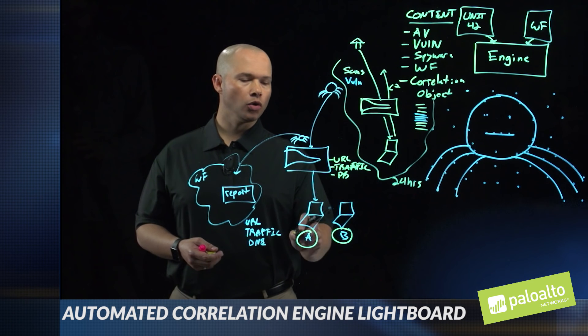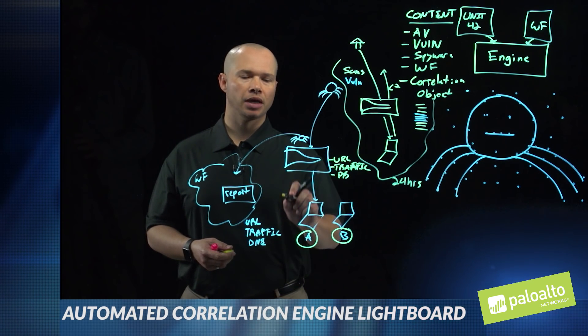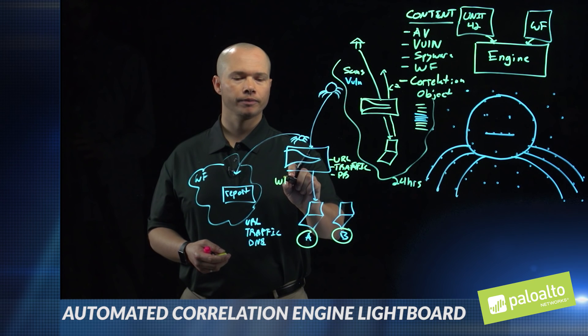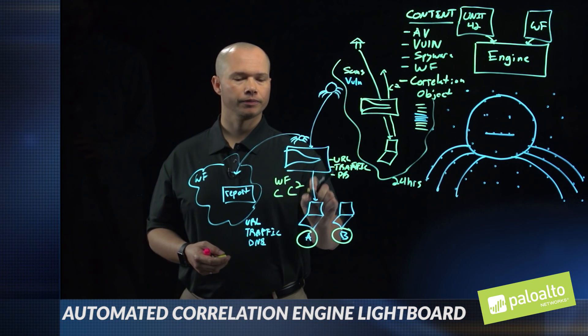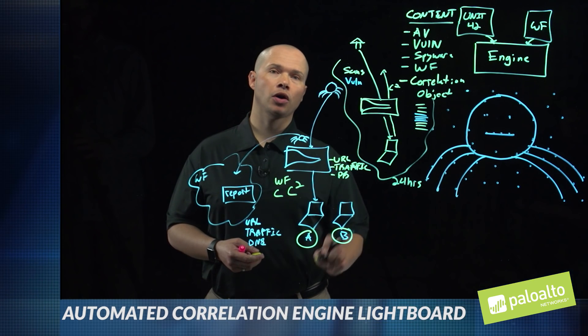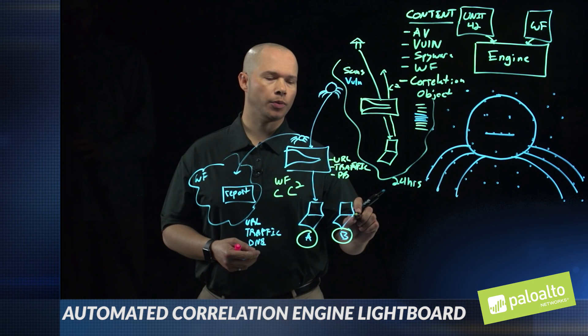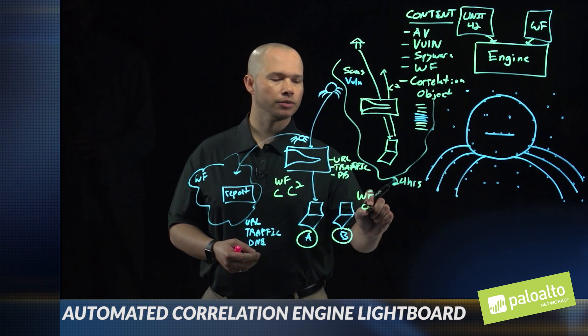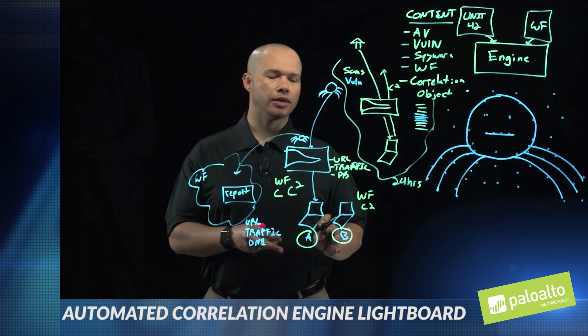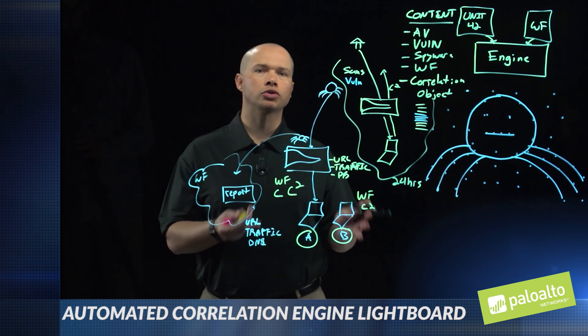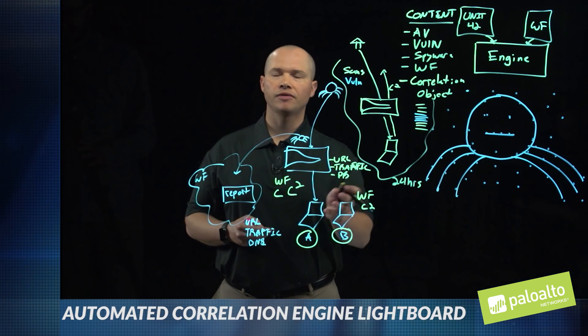When host A is the one that downloaded the file and exhibited the behaviors, we call that WildFire Correlated C2. And when we see a different host in the network exhibit the behaviors associated with a different WildFire report, we call this WildFire C2. Keep in mind it's also important that we show you all the evidence. Whenever one of these events occurs, whenever we get a correlation match, there's more than just a log — we actually give you all the evidence that led us to believe that this particular host was infected, including the WildFire report and any of the associated behaviors.